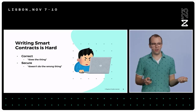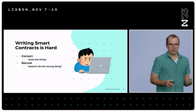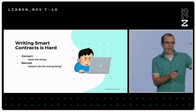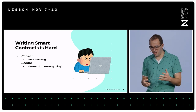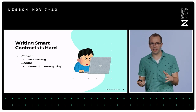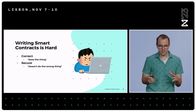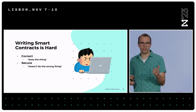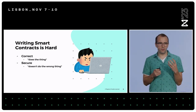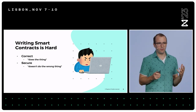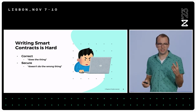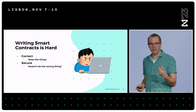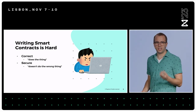Writing smart contracts is hard. We're at the Hacker HQ — I'm sure we've all had a taste of coding in our lives. Writing smart contracts is hard because in order for a smart contract to be ready for production, it needs to be two things: it needs to be correct, and it needs to be secure.